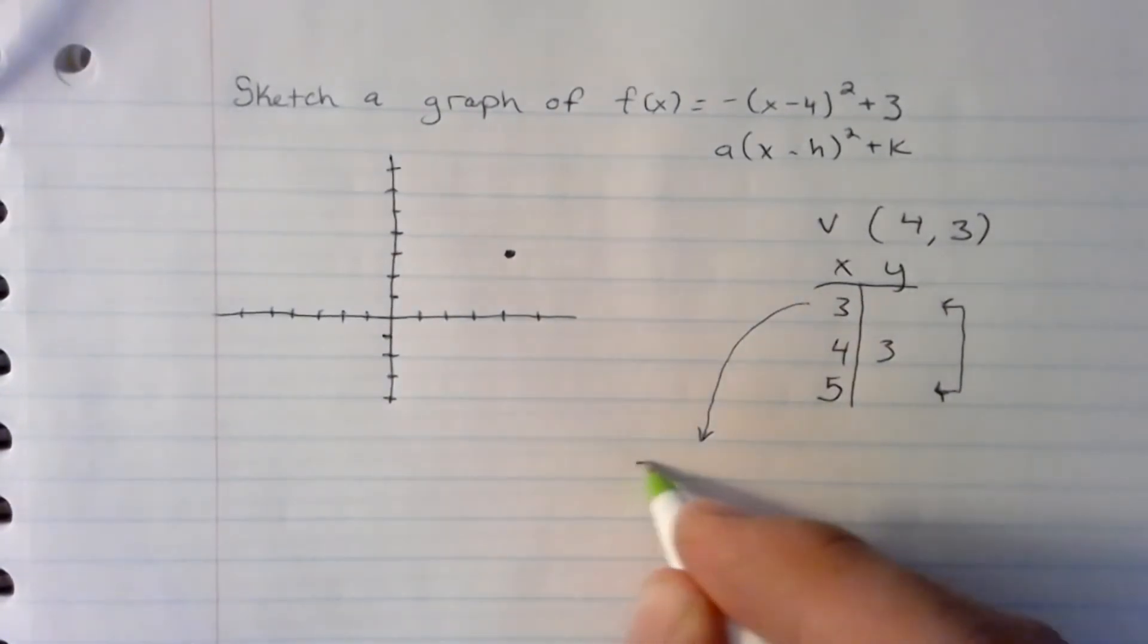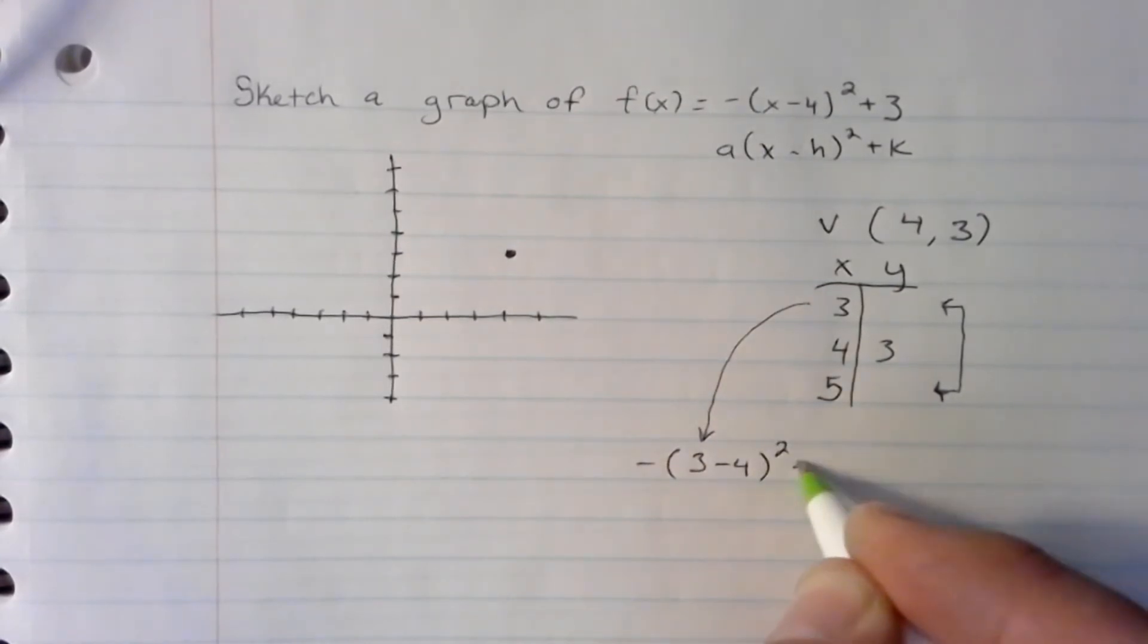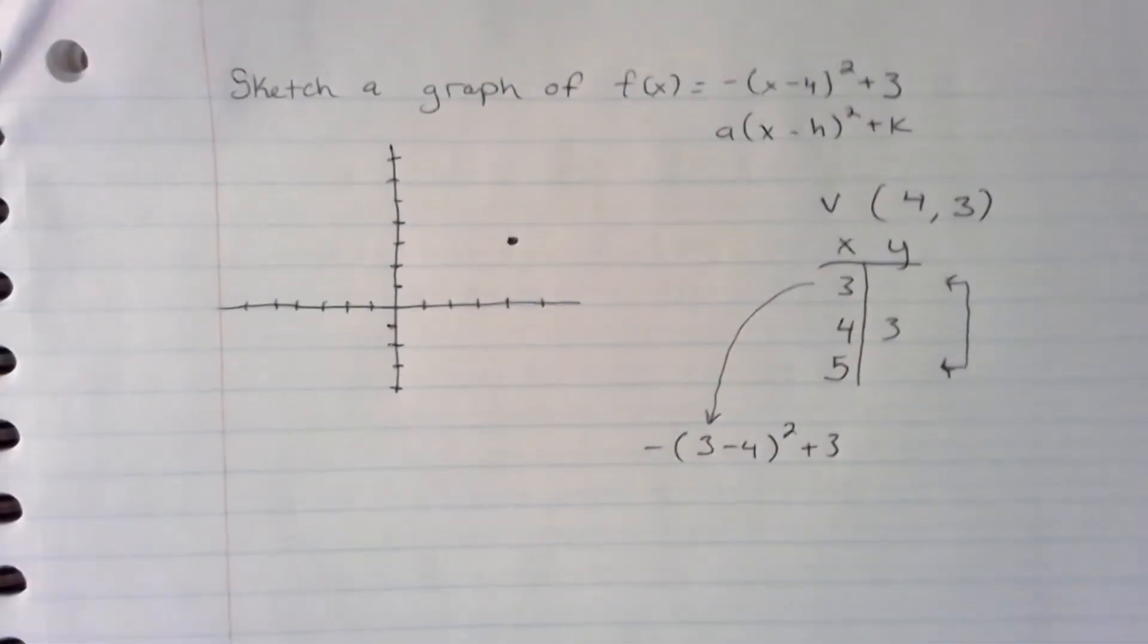Notice it opens down. And the negative a value up here told us that to begin with. And that is the graph of negative quantity x minus 4 squared plus 3.